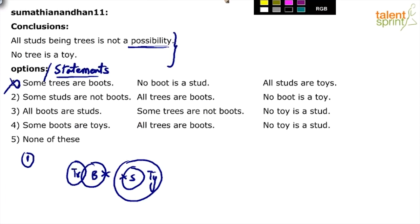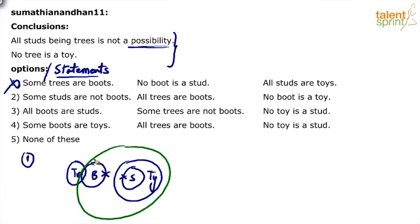The statement was all studs are toys. So instead of drawing a smaller toys circle, I can draw a bigger circle representing toys. This doesn't violate any statements - all studs are toys, some trees are boots, and no boot is a stud are all still followed. But now there is an overlapping between trees and toys shown in the shaded region. The moment trees and toys overlap, we cannot say no tree is a toy. So option one is wrong.